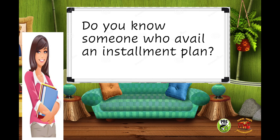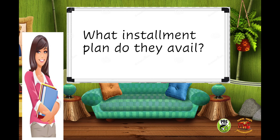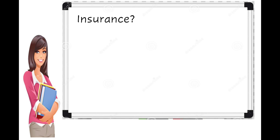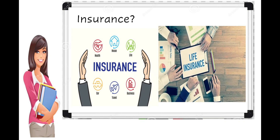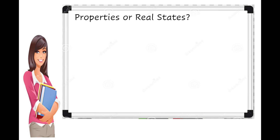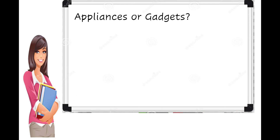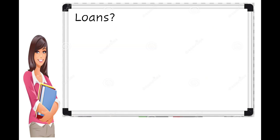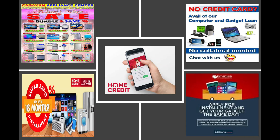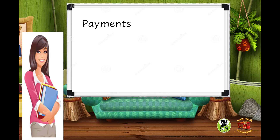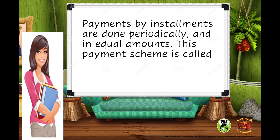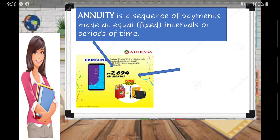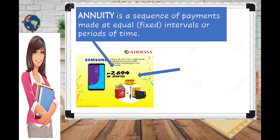Do you know someone who availed an installment plan? What installment plan did they avail? Is it an insurance, properties or real estate, appliances, gadgets, or loans? We can see lots of offerings through the internet and shopping centers like malls and appliance centers. Payments by installment are done periodically and in equal amounts — this payment scheme is called annuity. Annuity is a sequence of payments made at equal or fixed intervals or periods of time.